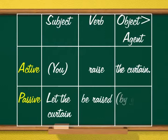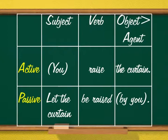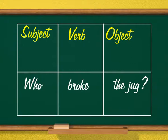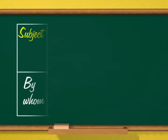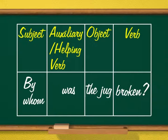Active: 'You raise the curtain' — you is subject, raise is verb, the curtain is object. Passive: 'Let the curtain be raised by you' — let the curtain is subject, be raised is verb, by you is agent. Active: 'Who broke the jug?' — who is subject, broke is verb, the jug is object. Passive: 'By whom was the jug broken?' — by whom is subject, was is auxiliary verb, the jug is object, broken is verb.